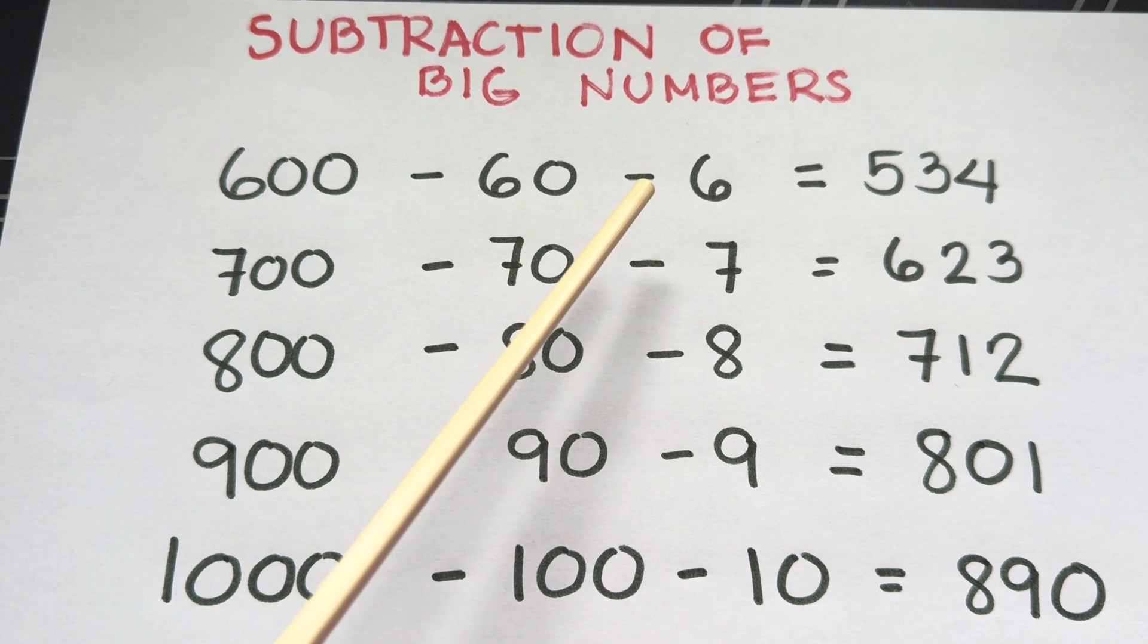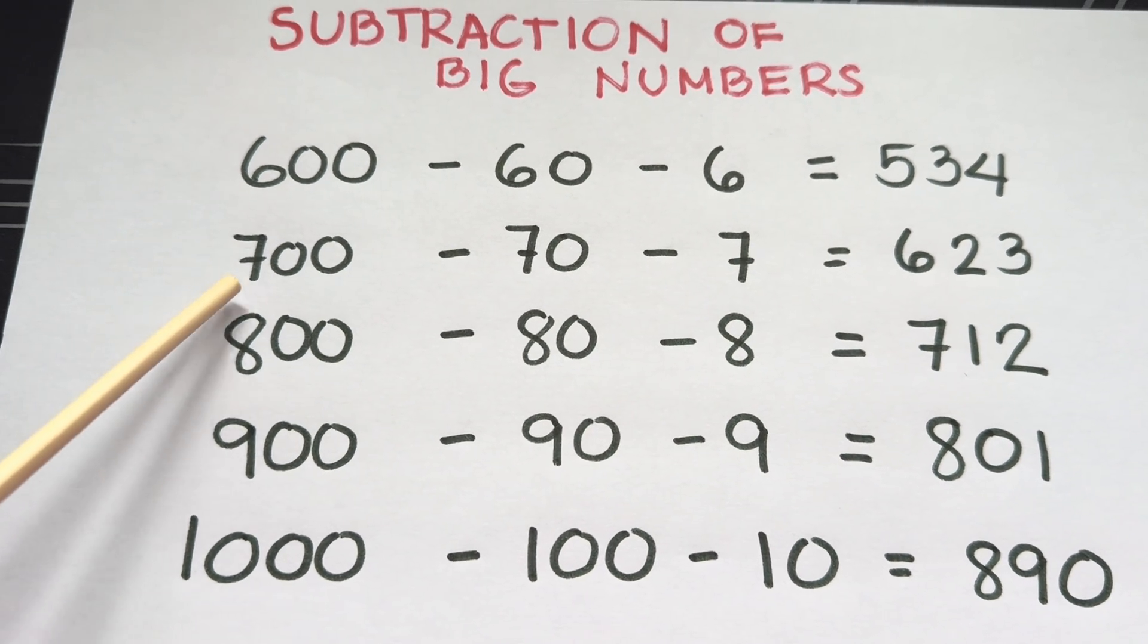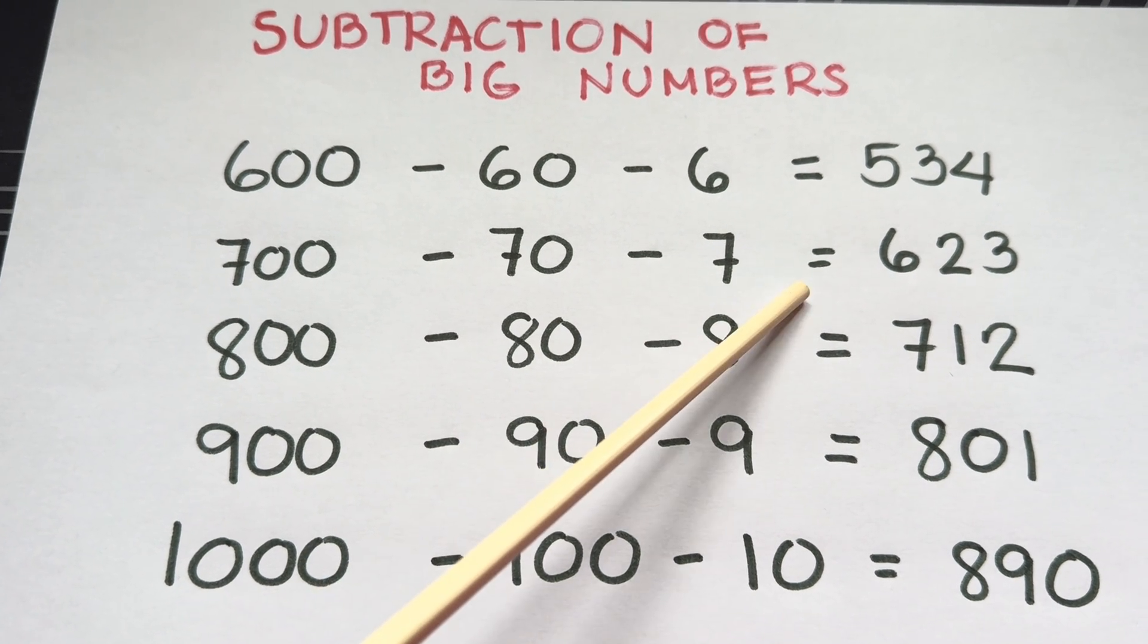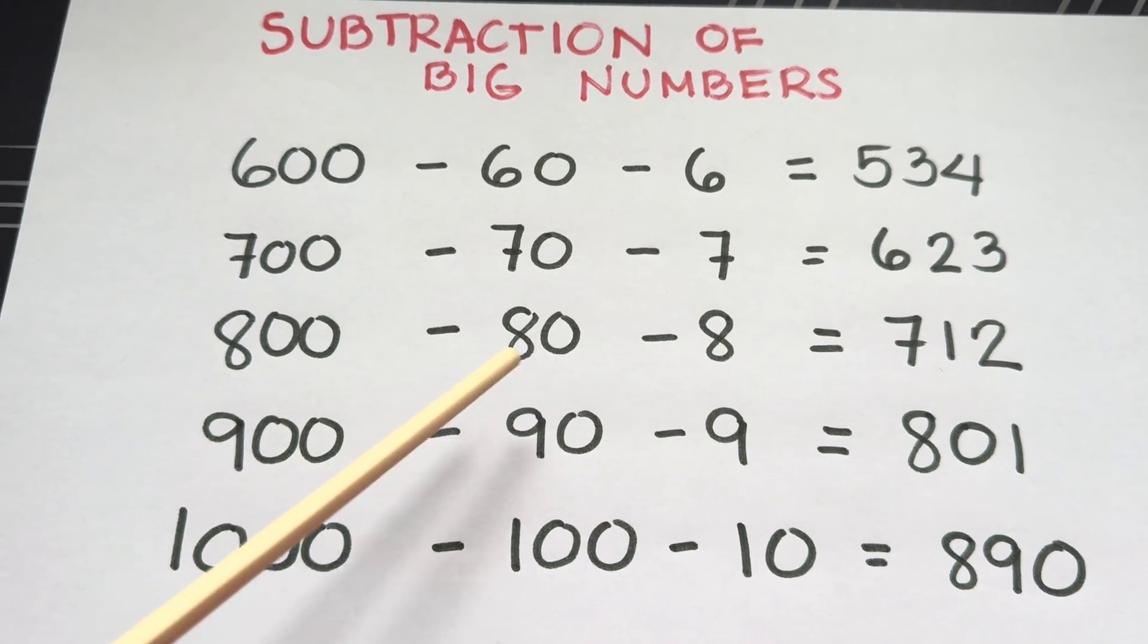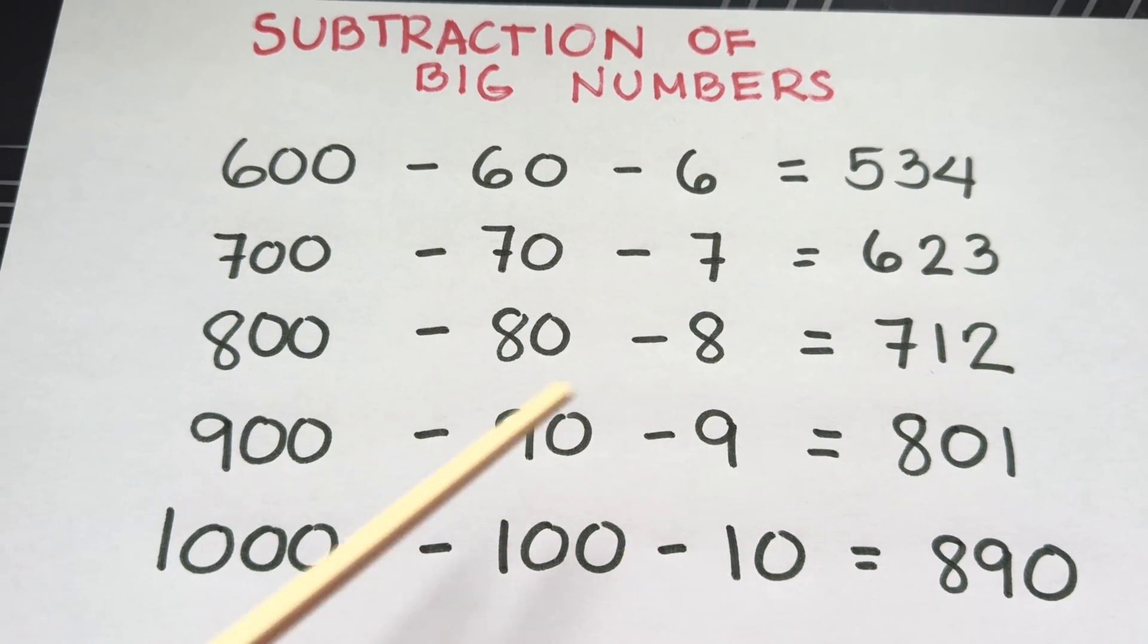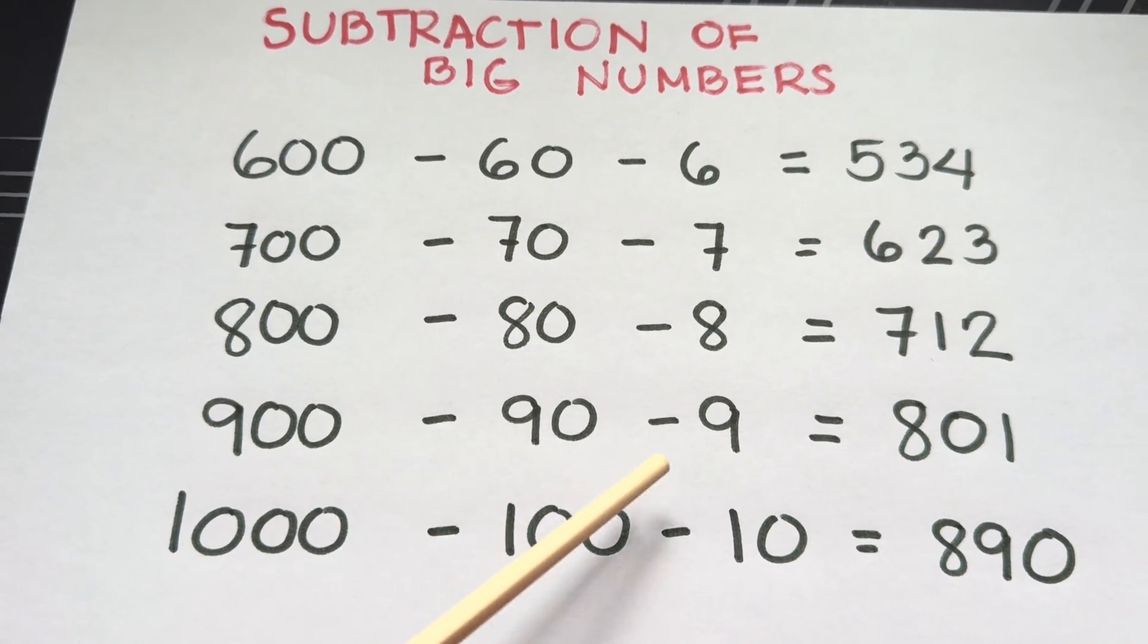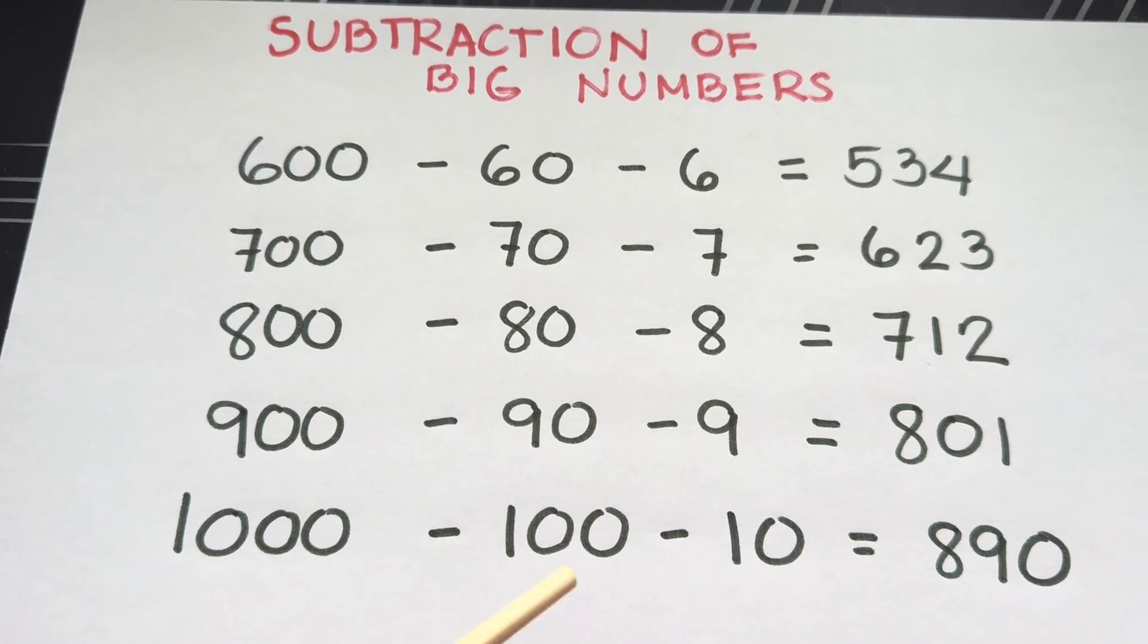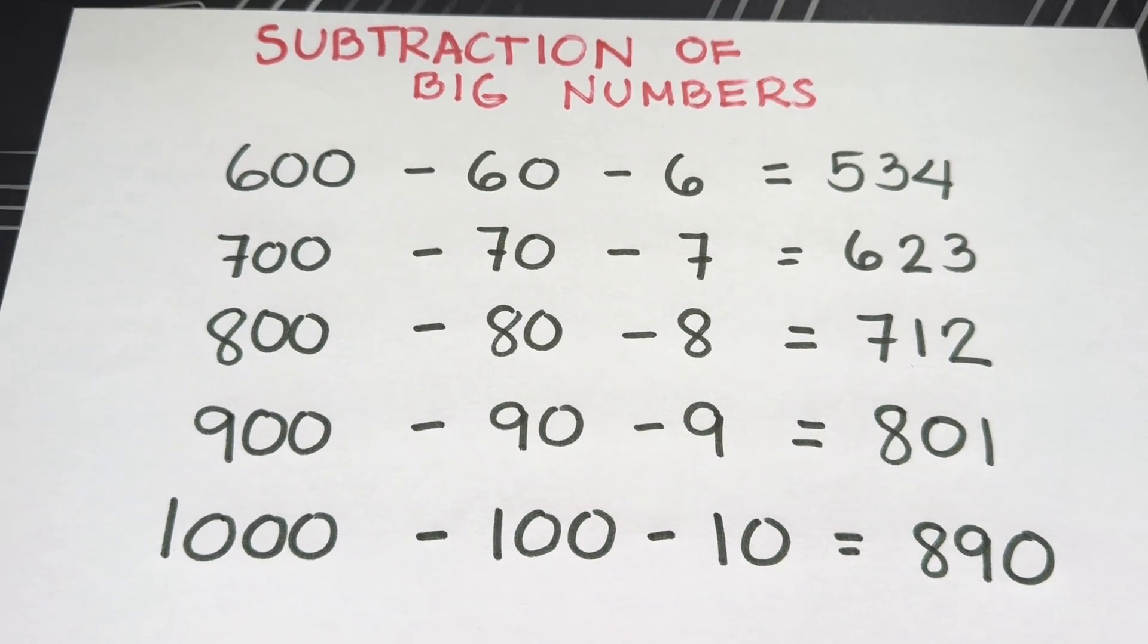60 minus 6 equals 534. 700 minus 70 minus 7 equals 623. 800 minus 80 minus 8 equals 712. 900 minus 90 minus 9 equals 801. 1000 minus 100 minus 10 equals 890.